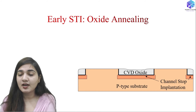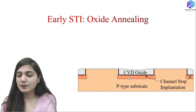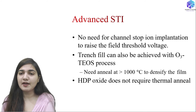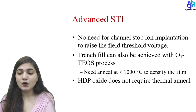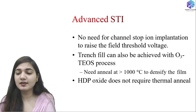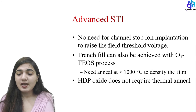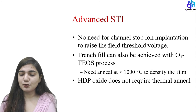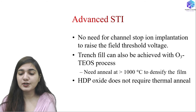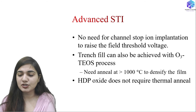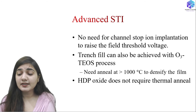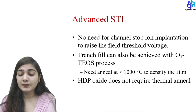After the low-cost STI process, we perform annealing, after which the penetration of the p-region increases — the depth increases. Then we proceed to future steps. In advanced STI, we don't need channel stop ion implantation to raise the field threshold voltage. Trench fill can be achieved with the ozone-TEOS CVD process, but it needs annealing at greater than 1000°C to densify the film. Alternatively, HDP oxide can be used, which does not require thermal annealing.